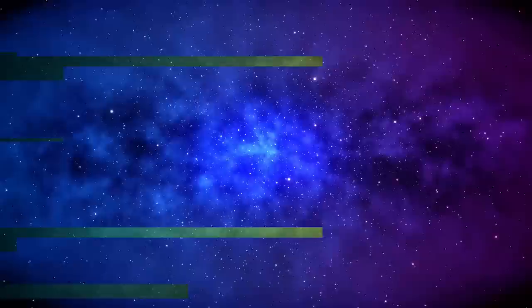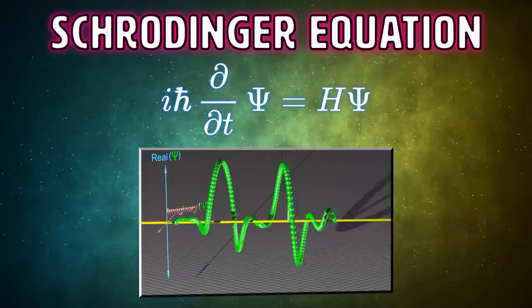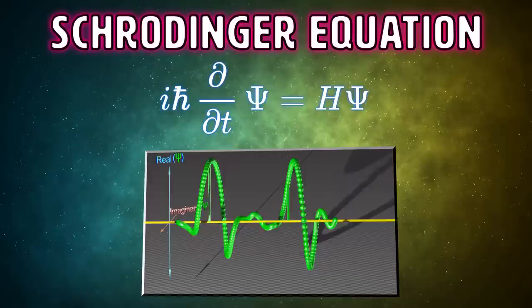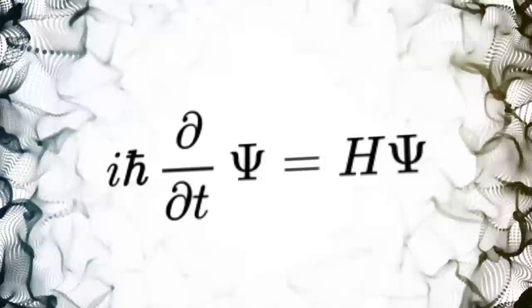For example, when I took some time to study physics, the equation I wanted to understand the most was Schrodinger's equation, because it caused so much controversy in the physics community around the nature of reality. It challenged so many long-held beliefs, but it ultimately ended up becoming a very useful tool to make later discoveries and create all sorts of technologies.